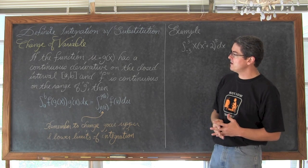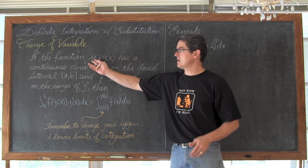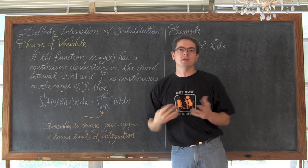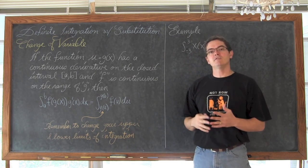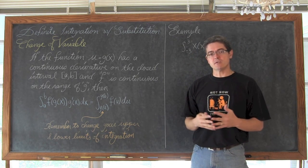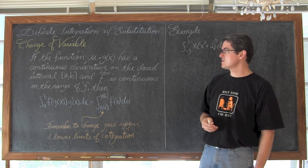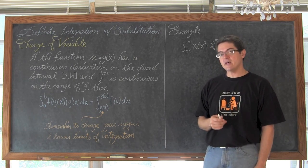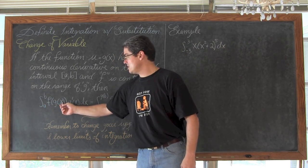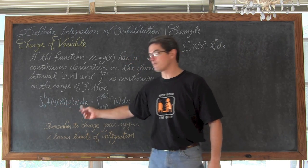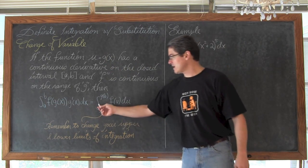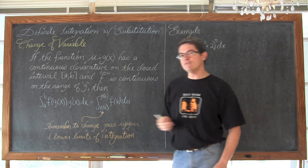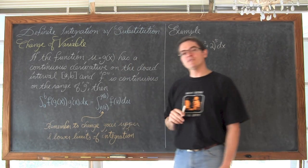So, change of variable. If the function u equals g — this is again us looking normally at that inner function, trying to find that inner function, letting it equal u, and doing all the substitutions to eliminate all references of the original variable in your integration expression to that variable of u. It has a continuous derivative on the closed interval AB, and a function f is continuous on the range of function g, then the definite integral of f times g' dx from a to b is equal to the definite integral of f du. But note here, the lower bound instead of being a is g(a), and the upper bound of our definite integral is now g(b).